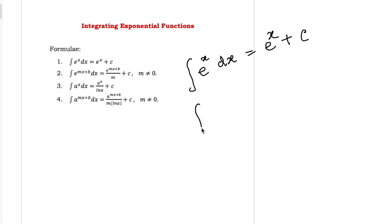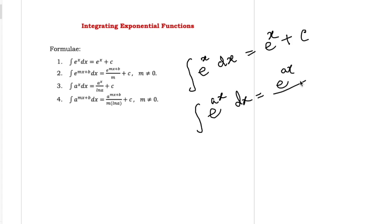And integration of e to the power ax will be what? Integration of e to the power ax is equal to e to the power ax, divided by the derivative of ax. And we know the derivative of ax is equal to a, so we need to divide this result by a.